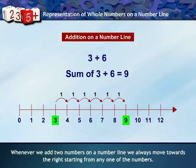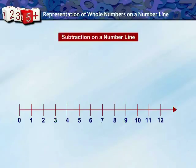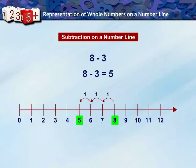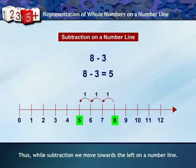Whenever we add two numbers, we move on the number line towards the right starting from either of them. Subtraction of two whole numbers can also be done on a number line. For 8 minus 3, start from 8 and move 3 jumps towards the left. We reach 5, so 8 − 3 = 5. Thus, while subtracting, we move towards the left on the number line.